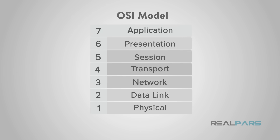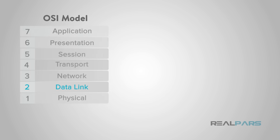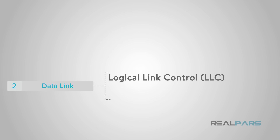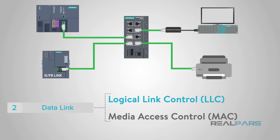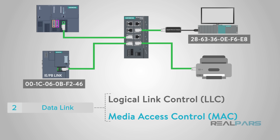Now that we have discussed the basic physical components of Ethernet, let's move into the second layer of the OSI model: the data link layer. The data link layer can be split into two sections: the logical link control, or LLC, and the media access control, or MAC. The logical link control establishes paths for data on the Ethernet to transmit between devices. The media access control uses hardware addresses that are assigned to network interface cards, or NIC, to identify a specific computer or device to show the source and destination of data transmissions.